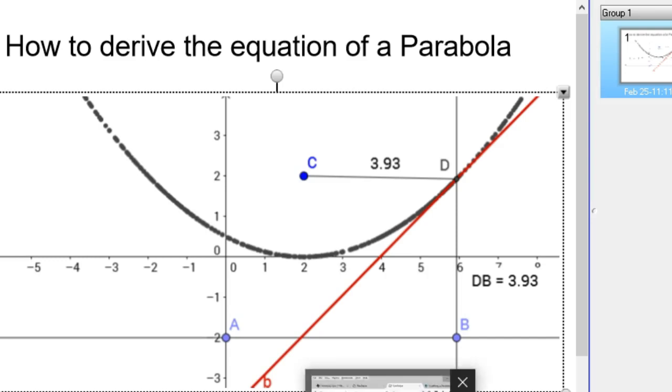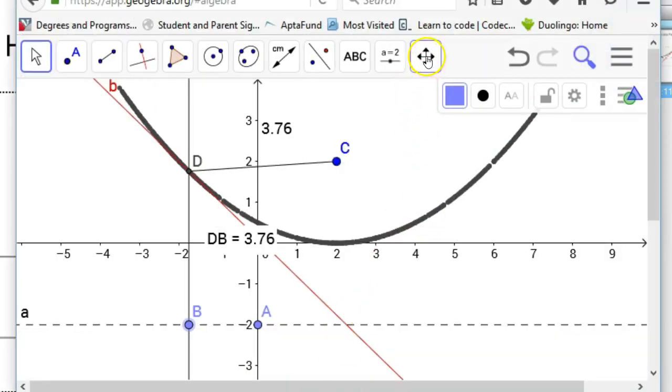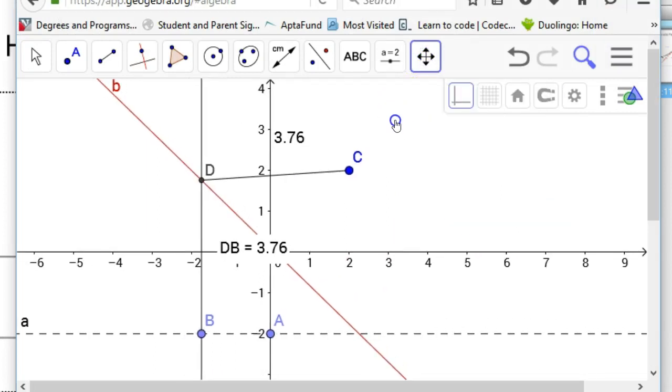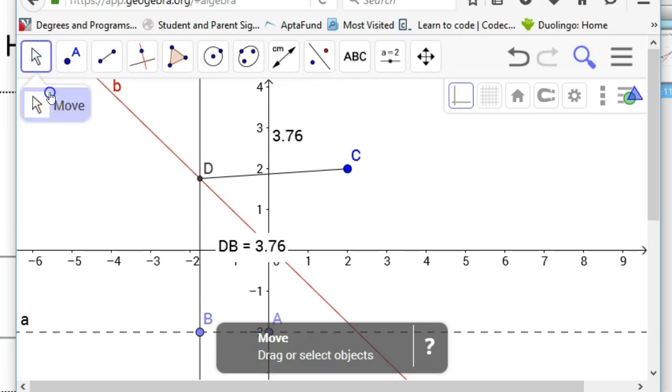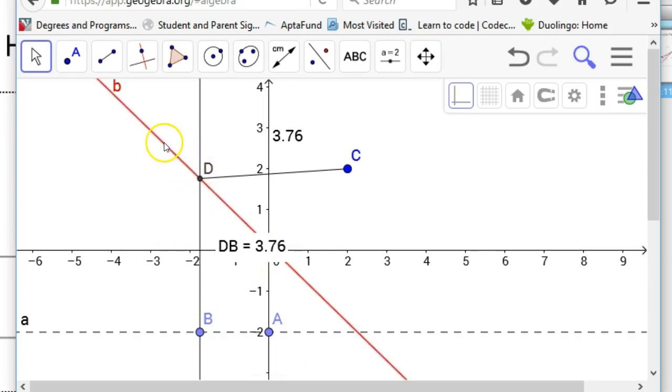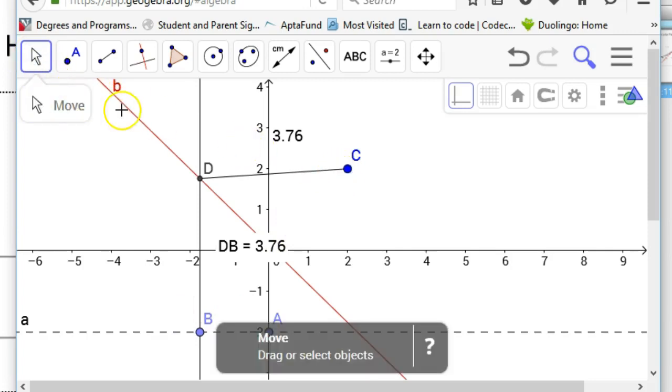Hopefully you're familiar with some of the terminology with parabolas. What I have here, I've created this in GeoGebra. Point D here is a point on this red line, which is the perpendicular bisector between B and C. Point D is the point that's on the red line and also on the perpendicular line that goes through B. Here's your directrix, this line. C is the focus of our parabola.